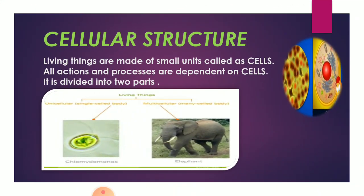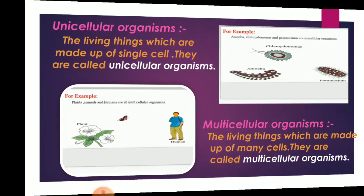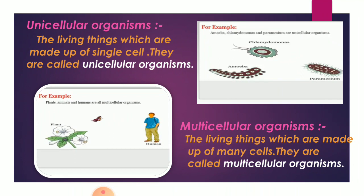The next characteristic is cellular structure. Living things are made up of small units called cells. Cells are the building blocks of living things. All actions and processes of living things are dependent on cells. Cells are divided into two types: unicellular organisms and multicellular organisms. Uni means one, cellular means cell — living things made up of a single cell are called unicellular organisms. Living things made up of many cells are called multicellular organisms.